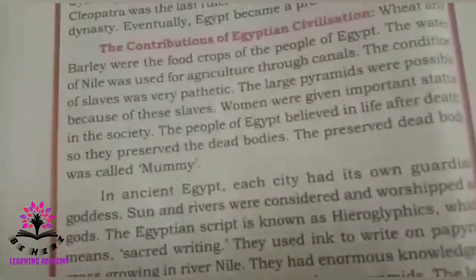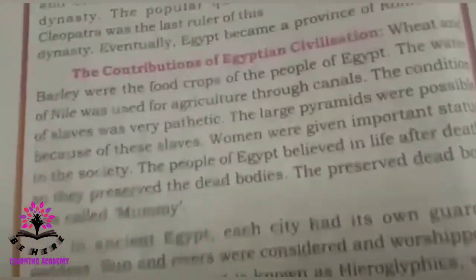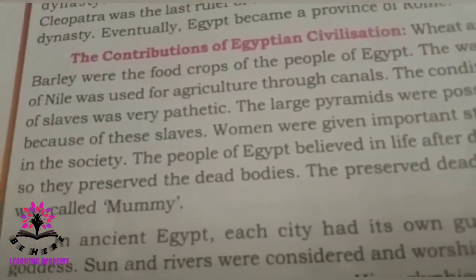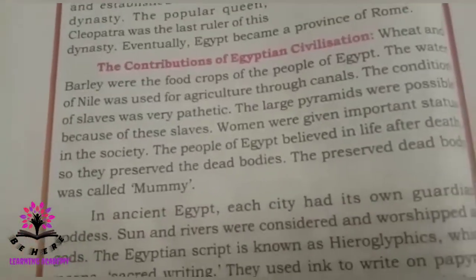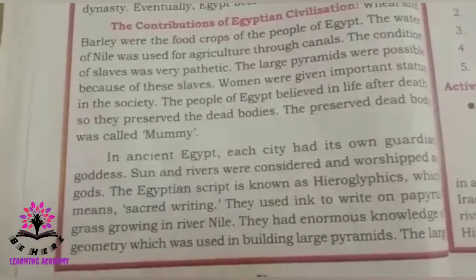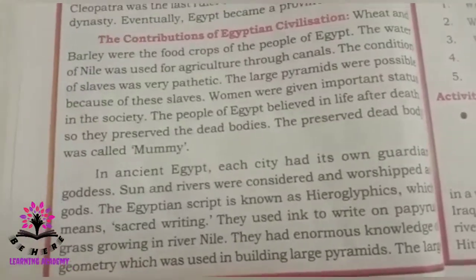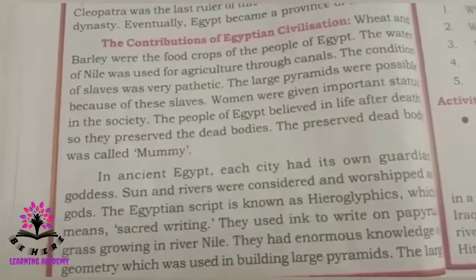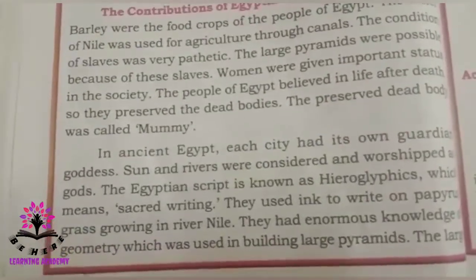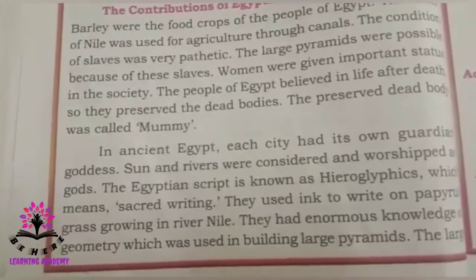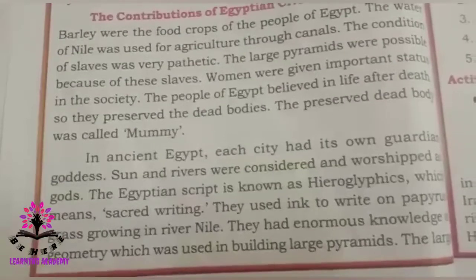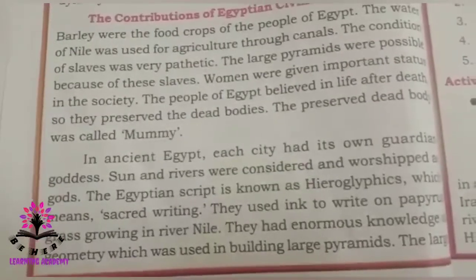Now we shall learn about the contributions of Egyptian civilization. In ancient Egypt, each city had its own guardian goddess. The sun and rivers were considered and worshipped as gods.